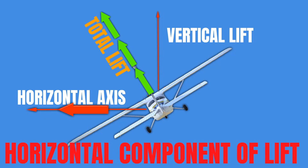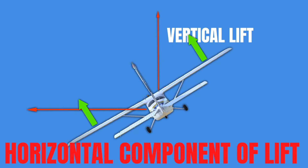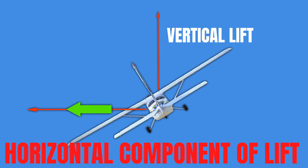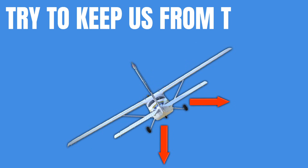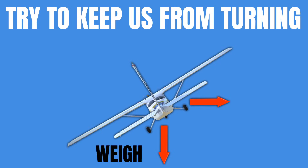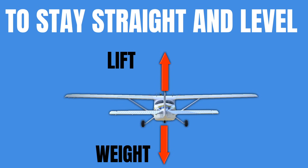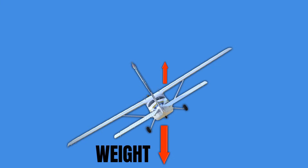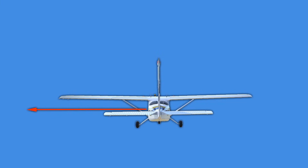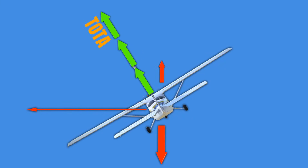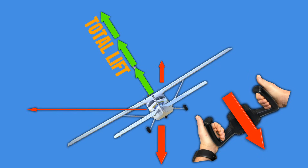A lot of people forget that there are two forces that oppose us anytime we turn the aircraft: weight and inertia. Weight and lift must be equal in order to maintain straight and level flight. So when you roll an airplane to turn it, weight and lift are no longer equal — we just traded some of our vertical lift for horizontal lift. Now weight is greater, which will cause us to descend. Because of this, anytime we roll our wings, we must also increase our total lift by pulling back on the yoke and increasing our angle of attack.